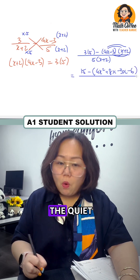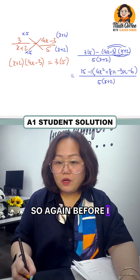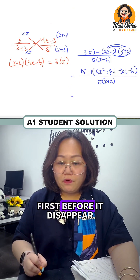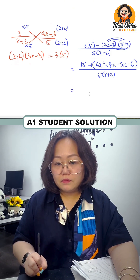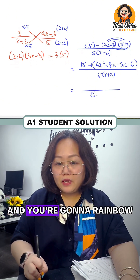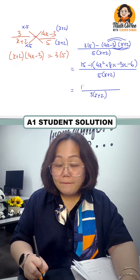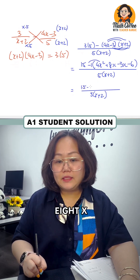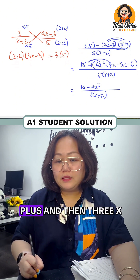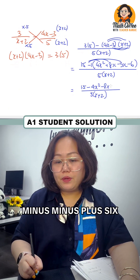Write a quiet line to do your expansion. Before moving to the next line, write the denominator first so it doesn't disappear. Now open up: 15, then rainbow out the bracket — minus 4x².